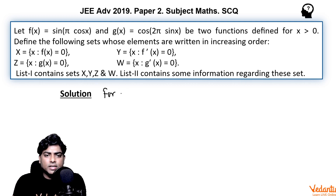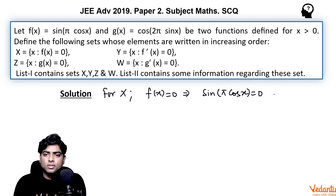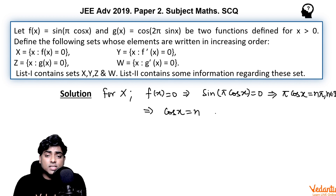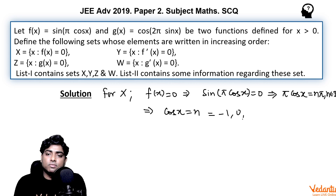For set X, we solve f(x) = 0. Since f(x) = sin(π cos x), setting it to zero means π cos x = nπ, so cos x = n, where n is an integer. Since the range of cos x is from -1 to 1, cos x can only take integral values -1, 0, or 1.